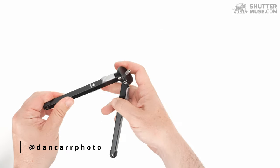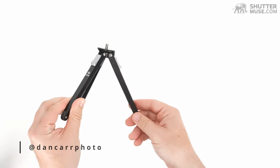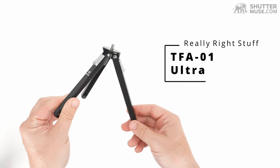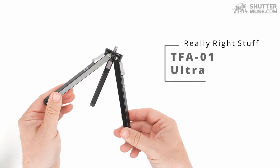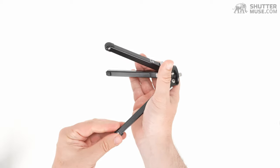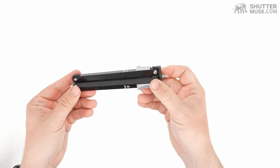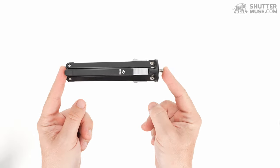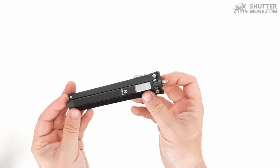Hey folks, Dan here from ShutterMuse.com. Today we are taking a look at the Really Right Stuff TFA-01 Ultra Pocket Tripod or Tabletop Tripod. As you can see, this is an extremely compact collapsible aluminum tripod. It's only about six inches in length once you collapse it like this.